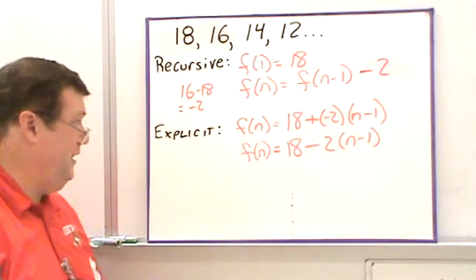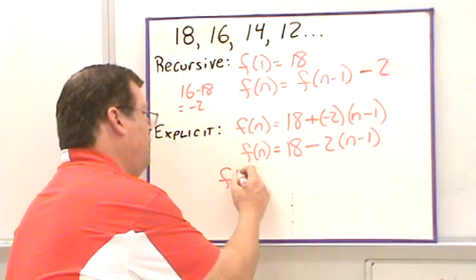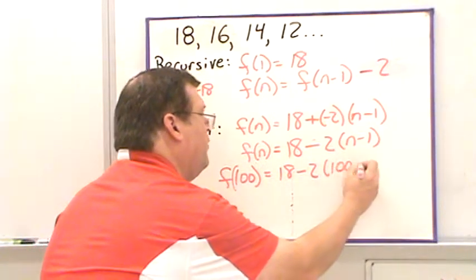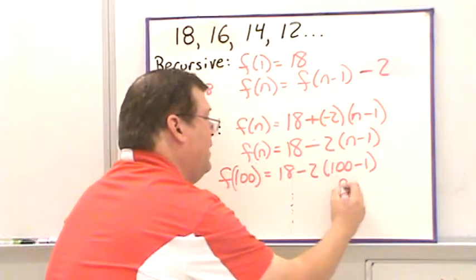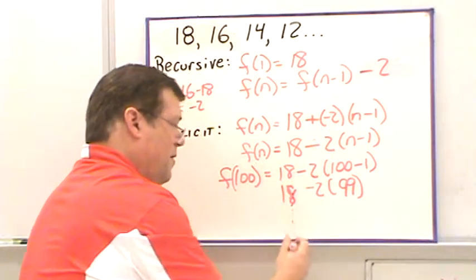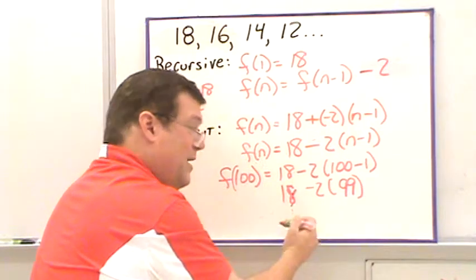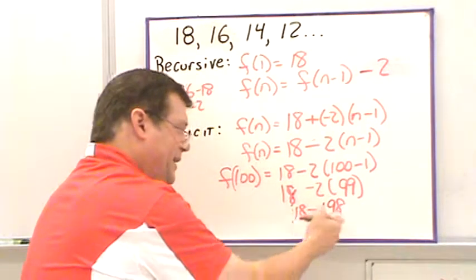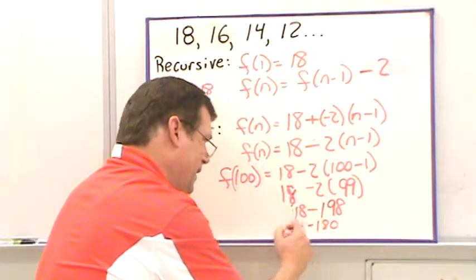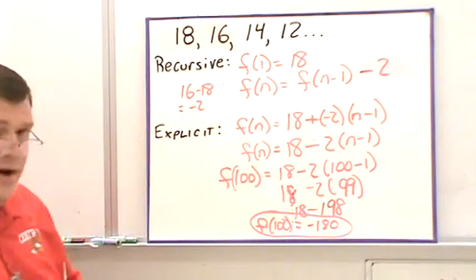If asked to find the 100th term of that arithmetic sequence, f(100) = 18 - 2(100 - 1) = 18 - 2(99) = 18 - 198 = -180. So f(100) is negative 180. You may not only be asked to write the recursive and explicit rules, but also to find the value of the arithmetic sequence at a certain term number.